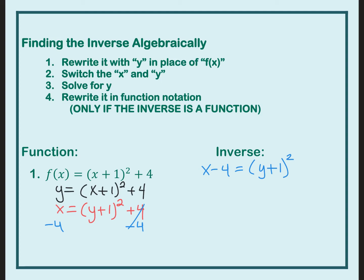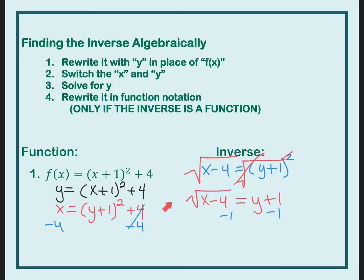How do we get rid of a square? The opposite of squaring something is to take the square root. So I'm going to take the square root, because the square root and the square cancel each other out, and I'm left with the square root of x minus 4 equals y plus 1. The last thing to do is subtract 1 from both sides. So the square root of x minus 4, minus 1, equals y.